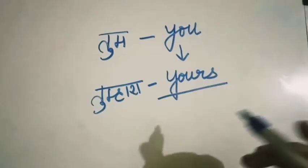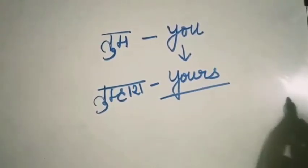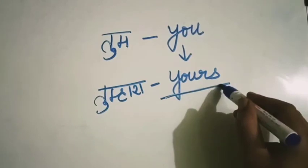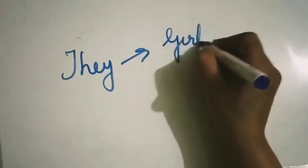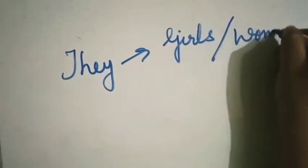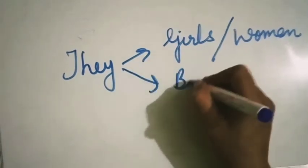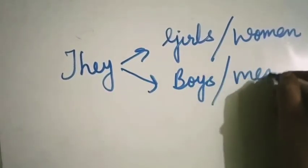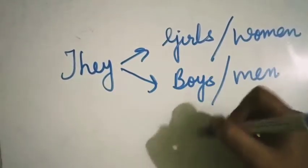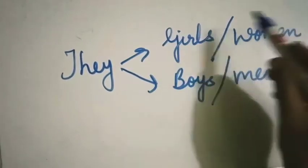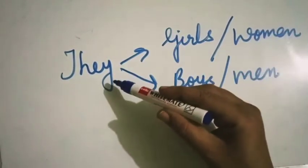'You are a good boy.' 'Is this book yours?' We use 'yours' in that case. When talking about many girls, women, boys, or men together, we use 'they'. So pronouns are of five categories.